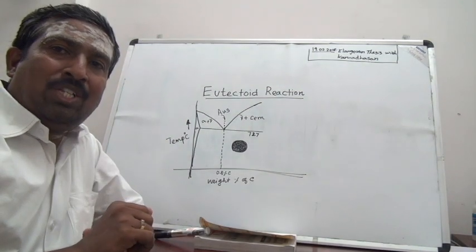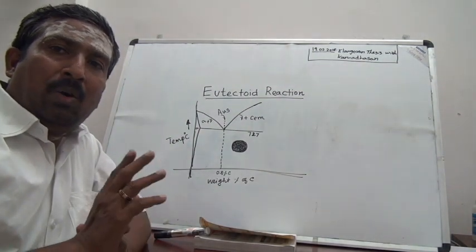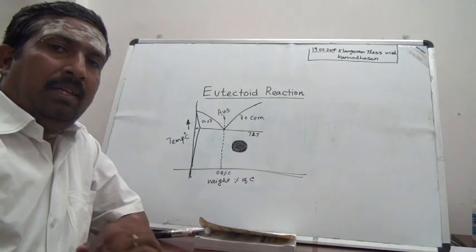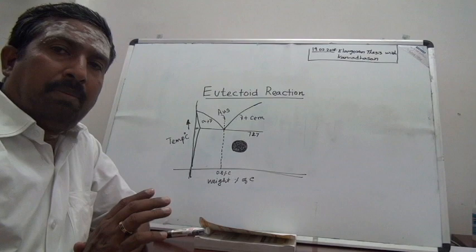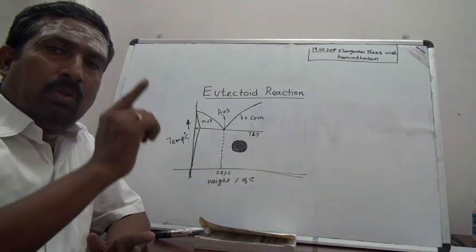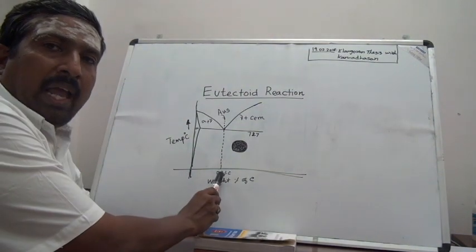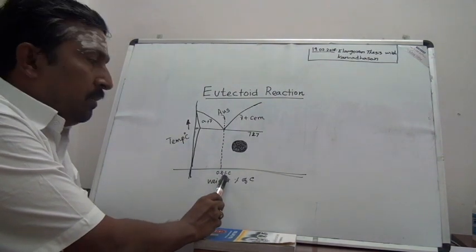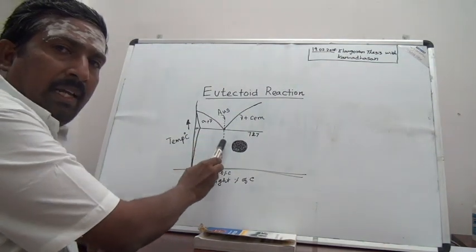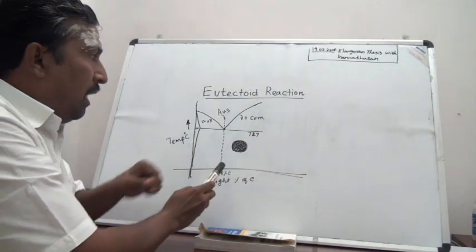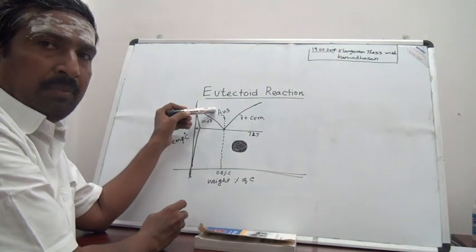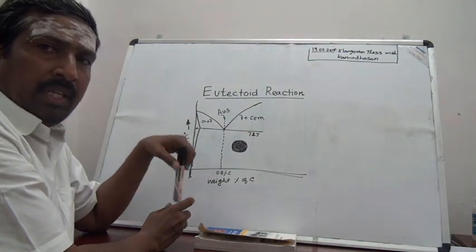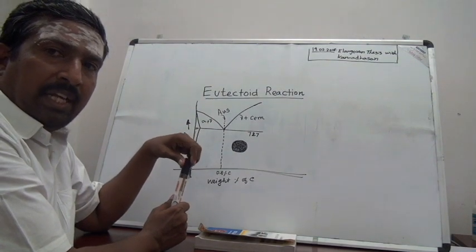This video explains how austenite is transformed into pearlite during the eutectoid reaction. To study one particular alloy, we draw a vertical line at that composition. For 0.8 percent carbon steel, we draw a vertical line at this composition. Above this temperature, the phase is austenite. When we cool down, we observe what happens to austenite when the eutectoid reaction takes place.